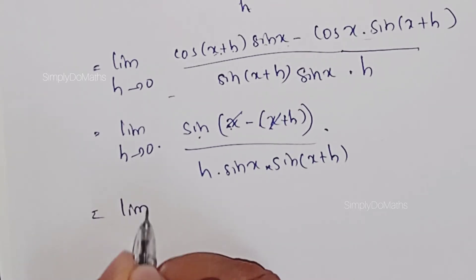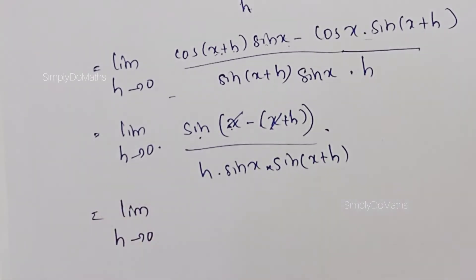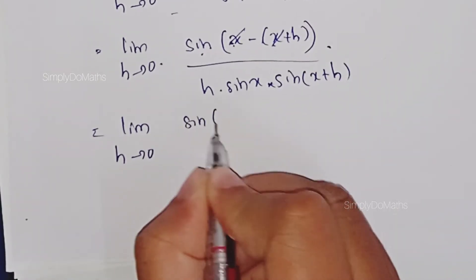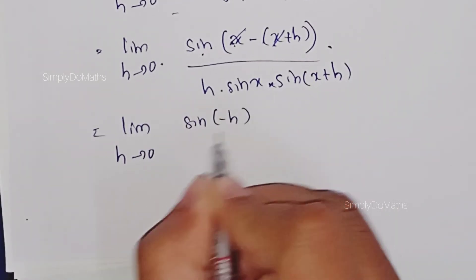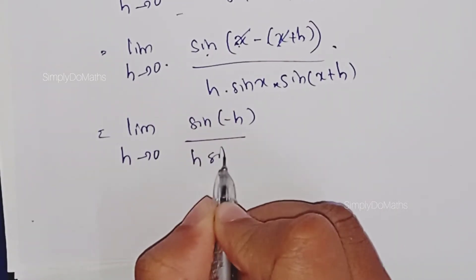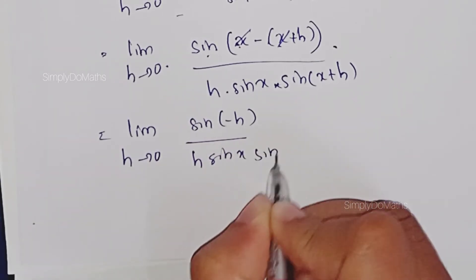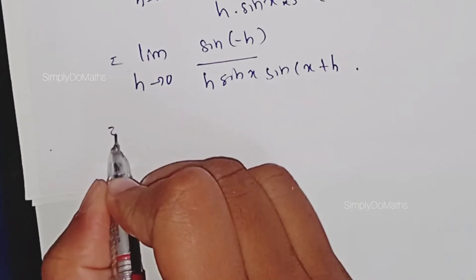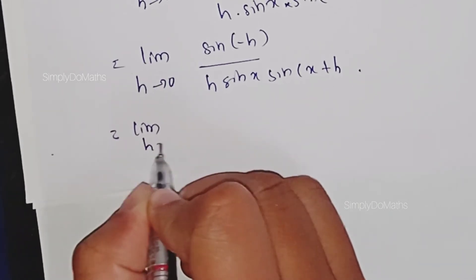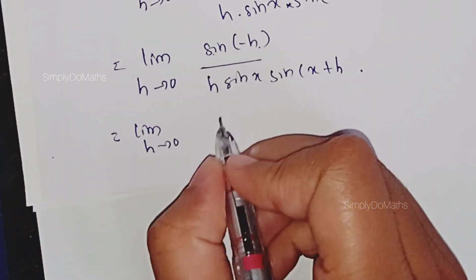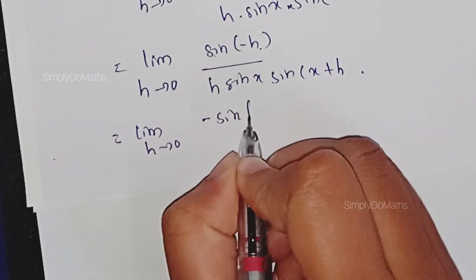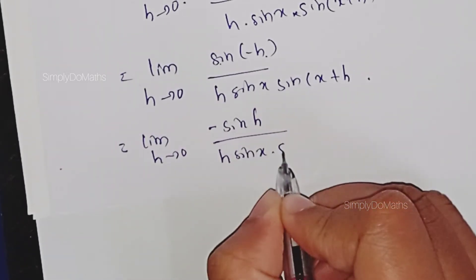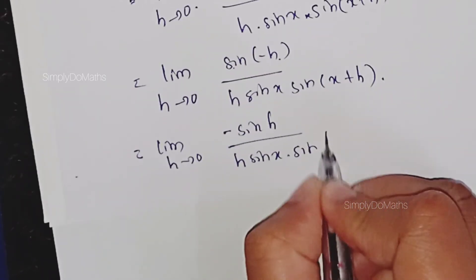We are left with the limit as h tending to 0 of sin(−h) divided by h·sin(x)·sin(x+h). This is nothing but the limit as h tending to 0 of −sin(h) divided by h·sin(x)·sin(x+h), since sin(−θ) = −sin(θ).